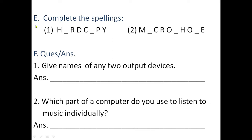Now question number E: complete the spellings. In question E there are two questions. You have to write the correct letter in the blank places to complete the spellings. Two words are given here — just complete both spellings correctly. Question number E is clear.